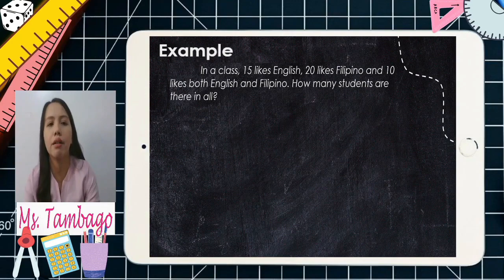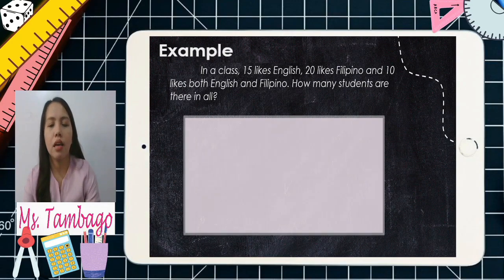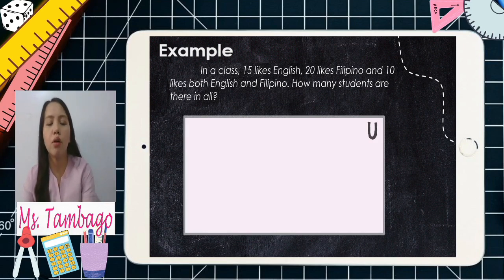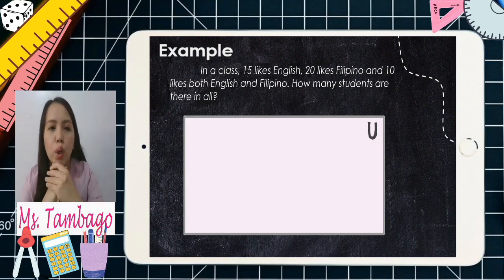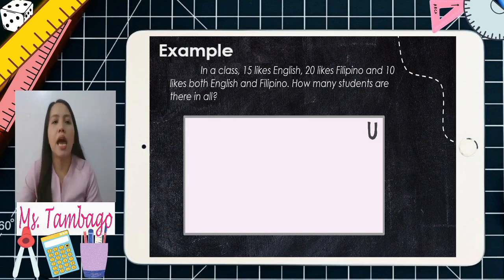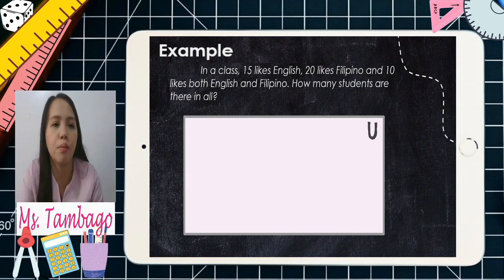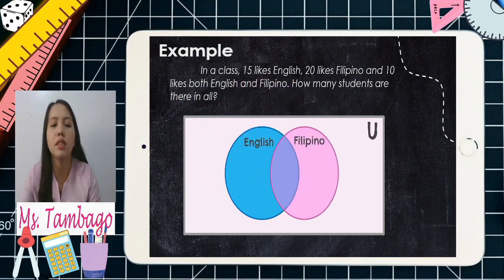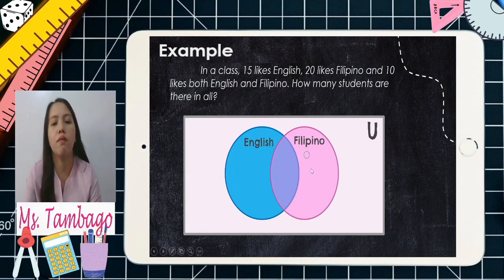First, let's have a Venn Diagram. Let's have a rectangle for our universal set. Now, how are we going to determine whether to overlap the two circles or separate them? Let's check if they have something in common — the term 'both.' Since we have the term 'both,' we're going to overlap the two circles. First is English for the blue one, and then Filipino for the pink circle.